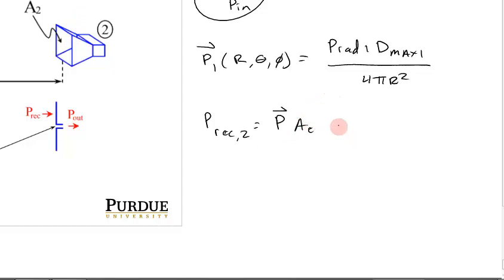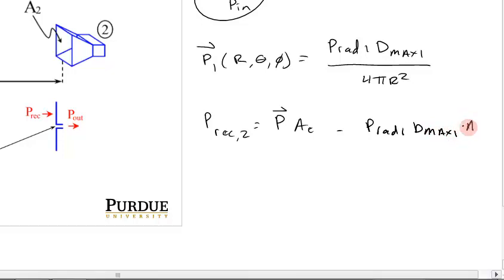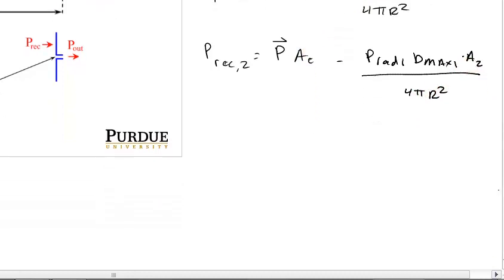The power received by antenna 2 is the power density that antenna 2 sees times its capture area. So the power received by antenna 2 equals P_rad1 times the directivity of antenna 1 times the capture area of antenna 2 (A₂), divided by 4πr². We've got that in our quiver.